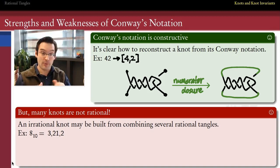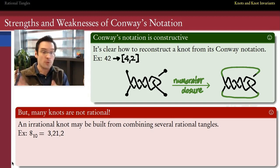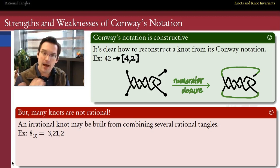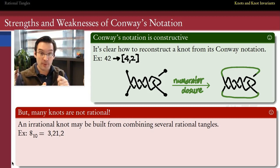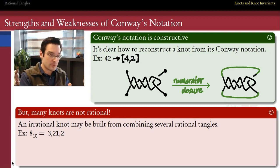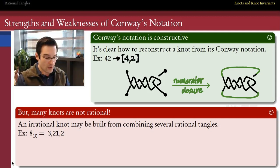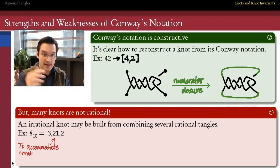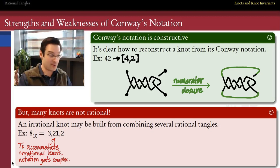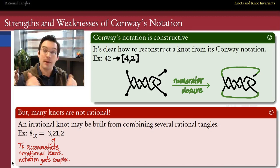The good news about Conway notation is it's really richly constructive — now that we know how rational tangles work, we can reconstruct a knot from its Conway notation. The bad news is that not all knots are rational knots, so not every knot has a friendly single rational-tangle Conway notation associated with it. For example, the knot 8_10 — roughly the tenth eight-crossing knot discovered in the early twentieth century — is not a rational knot.